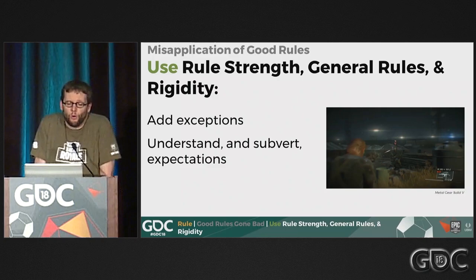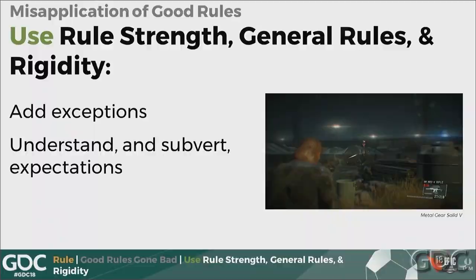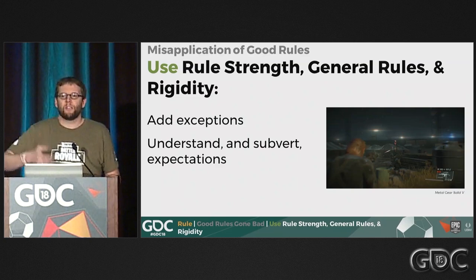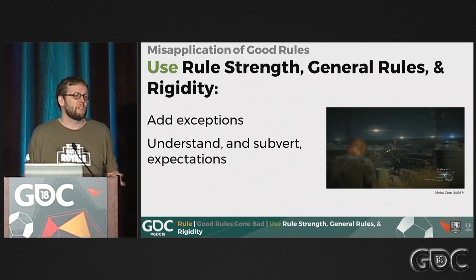To use rule strength intentionally, you can add exceptions and subvert expectations — set players up with a dominant strategy, let them use it, then surprise them by mixing things up. Metal Gear Solid 5 had the adversary system where enemies would adjust to your tactics: if you got a lot of headshots, they'd start wearing helmets; if you snuck around, they'd wear night-vision goggles.